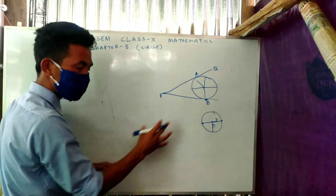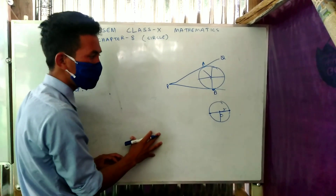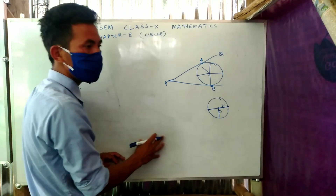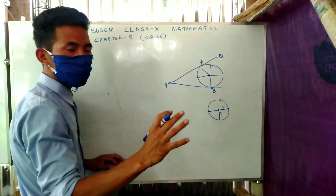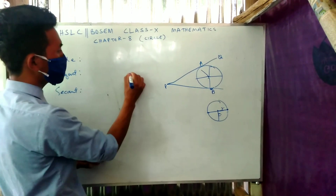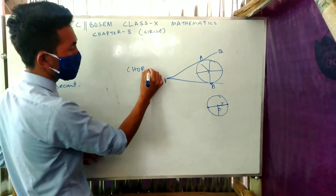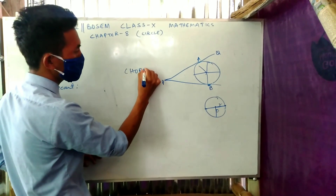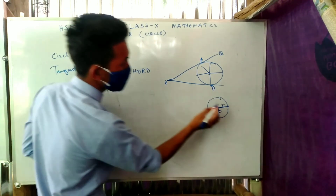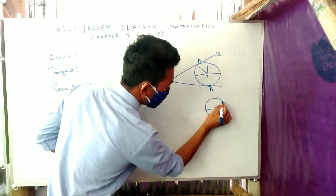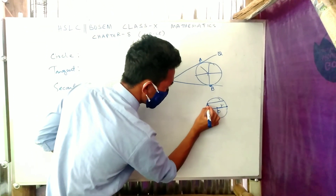This is the diameter. This is the chord (C-H-O-R-D). The chord is a line segment with its own code or classification.